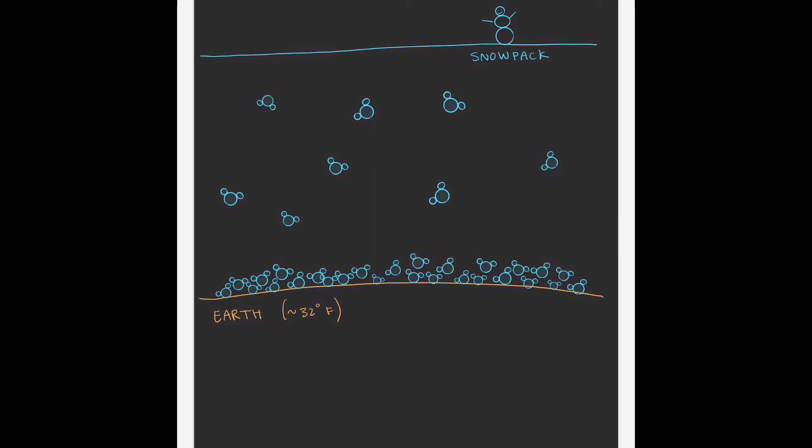So we've established that the very bottom of the snowpack near the earth is relatively warm. Now let's consider a scenario where the atmosphere is colder than 32 degrees Fahrenheit. Just like the dancers on the dance floor, the water vapor at the base of the snowpack is going to want to move away from its neighbors in order to avoid collision. And this is going to create a net movement of those molecules up through the snowpack towards the colder temperatures.